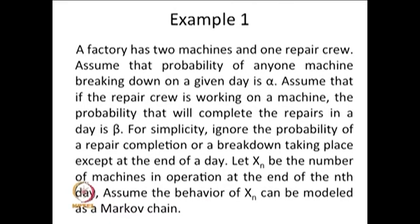The number of machines working on any day depends on how many machines were working the previous day and how many are under repair. So the dynamics of the number of machines in operation depends only on the number of machines working on the previous day, not all earlier days. Therefore, the memoryless property is satisfied, and Xn is called a discrete time Markov chain.